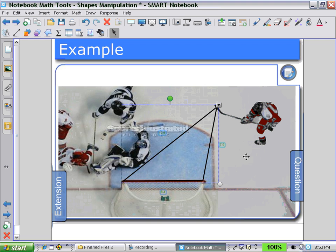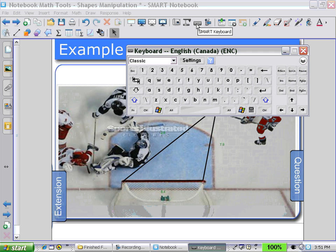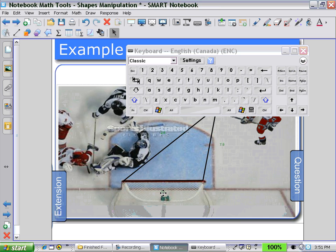Select the shape and show the side lengths. Now since the net regulation size is 6 feet, we can again input the value 6 by clicking on the side length.